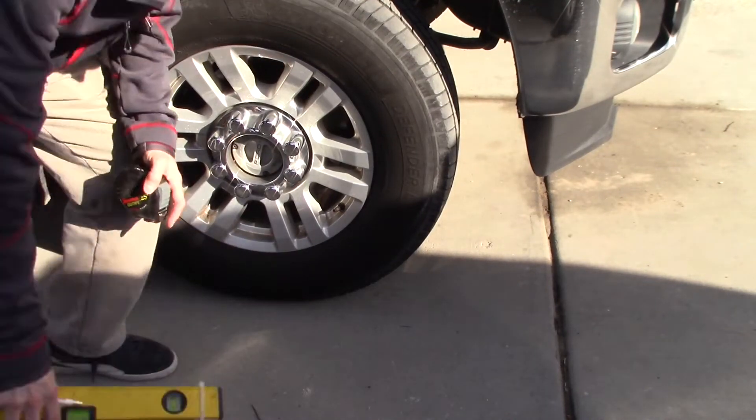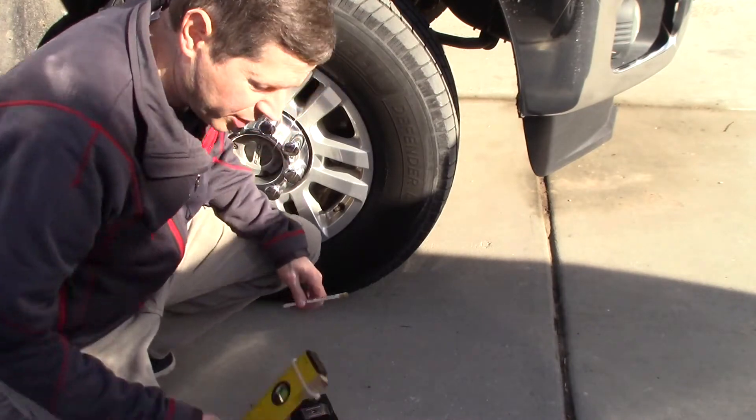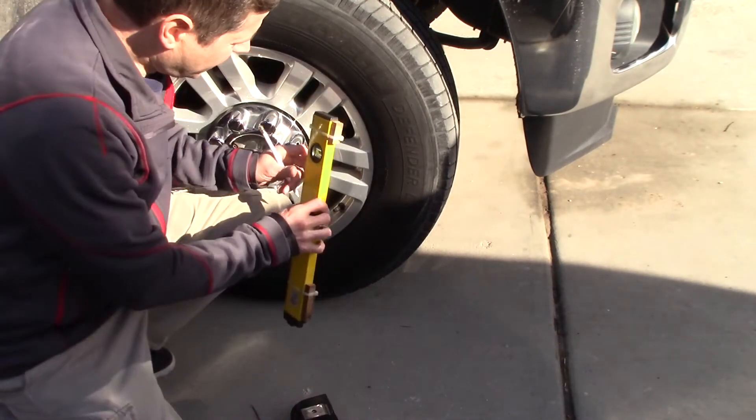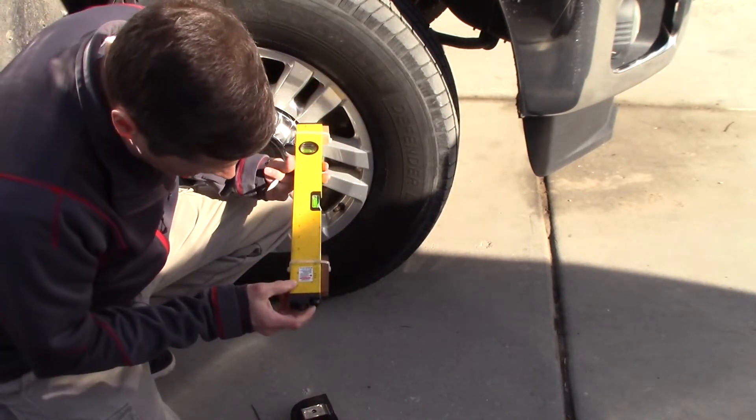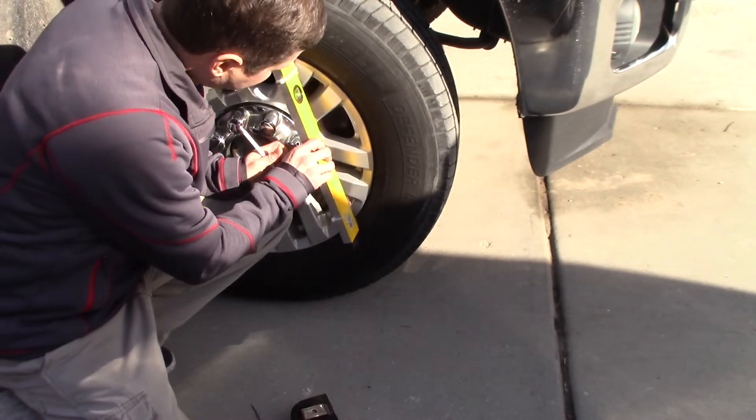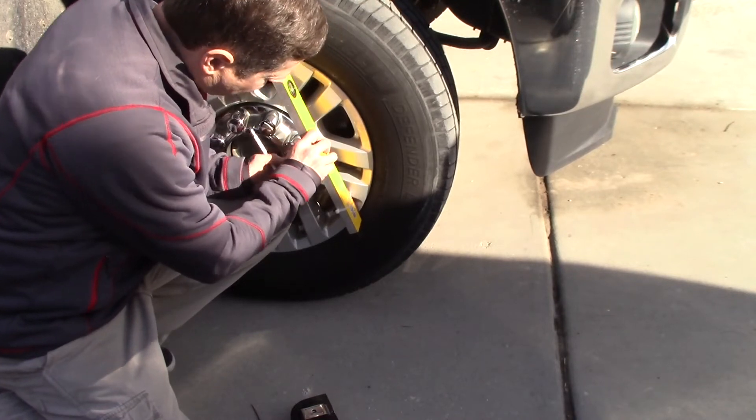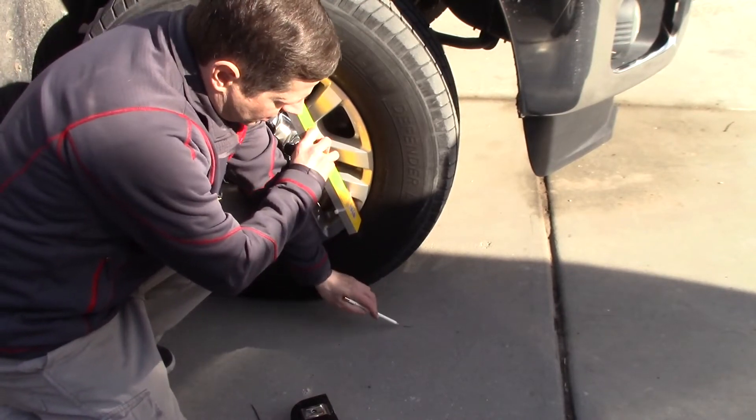I'm going to check the toe angle alignment. The first thing to do is measure the track width of both the front and rear tires. I've got a laser level here with a laser pointer, and I set it on the edges of the rim right there and then mark on the ground where the laser hits.